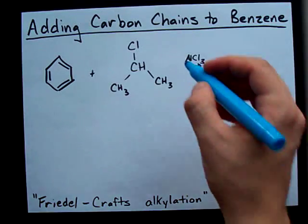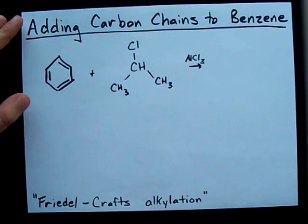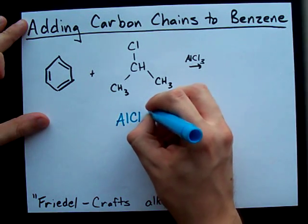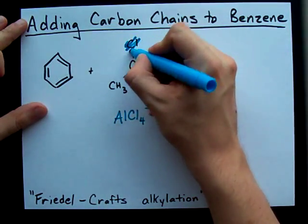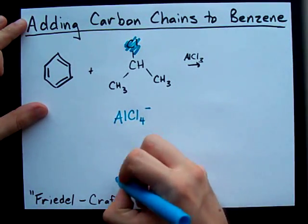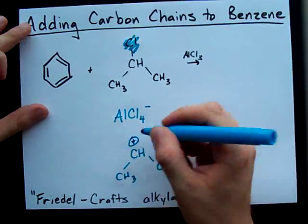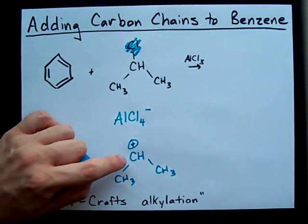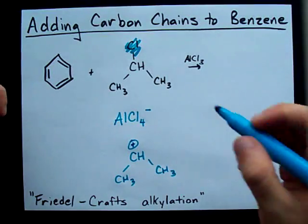Here's what happens. The aluminum chloride, combined with this molecule here, steals the chlorine away. It actually ends up making AlCl4⁻. But notice this chlorine is no longer there. You end up with CH — you've got your CH3 on this side and your CH3 on this side — and you're left with a positive charge there. You stole away the negative chlorine, so you're left with a positive charge.